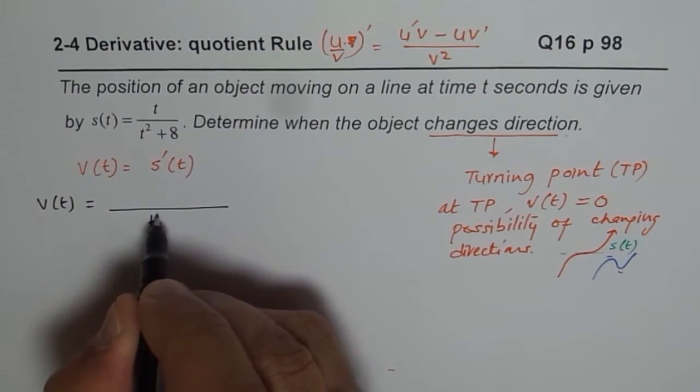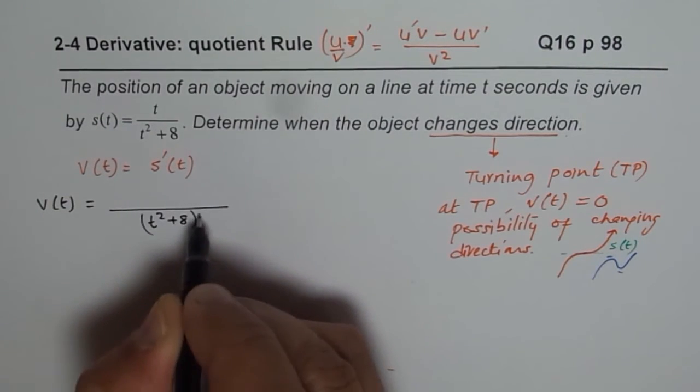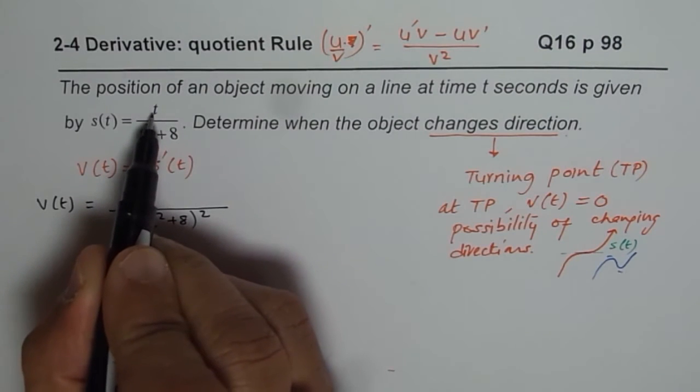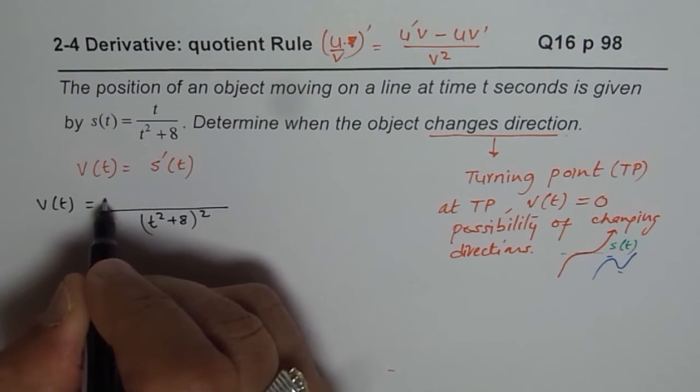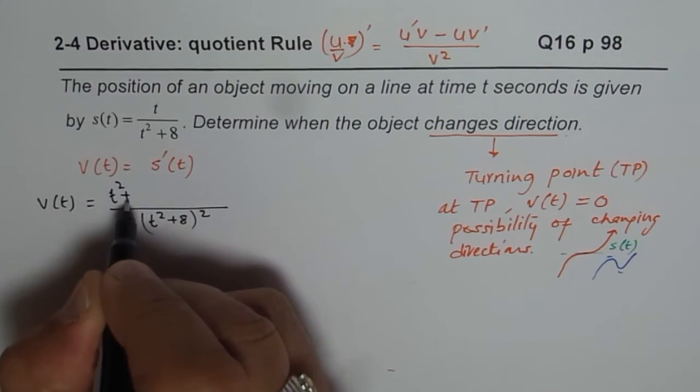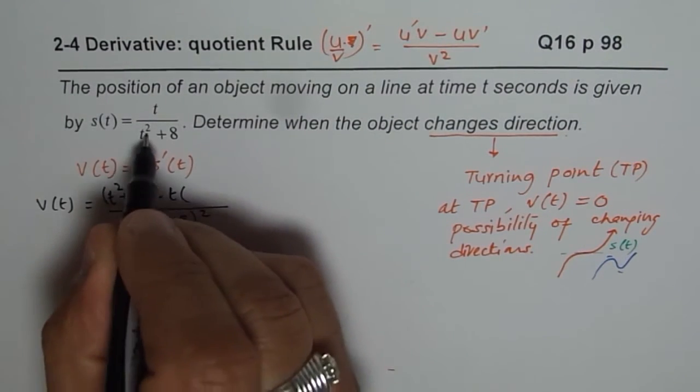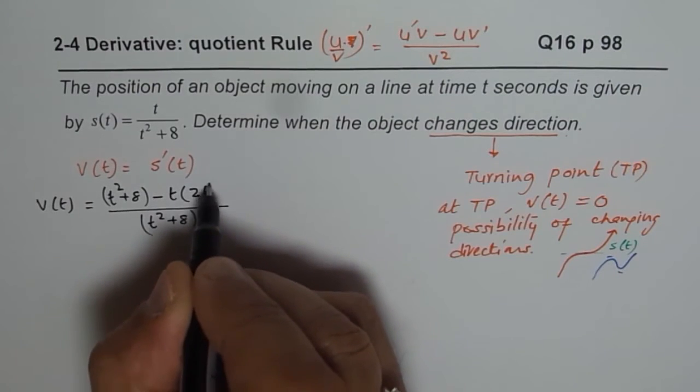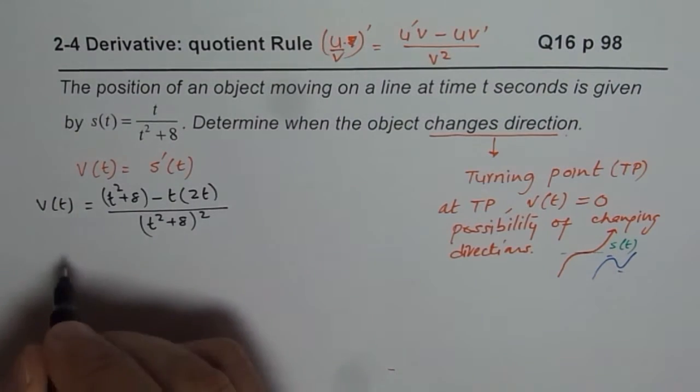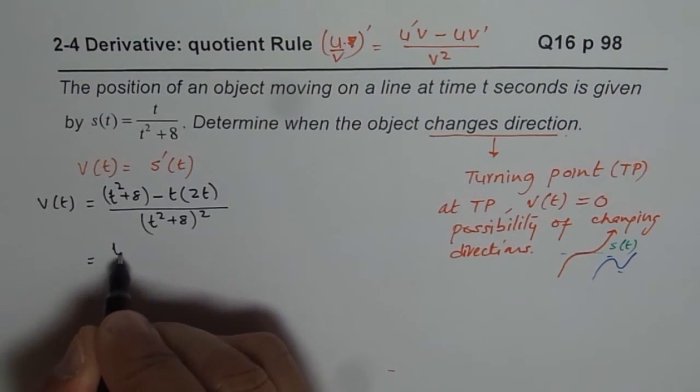So, denominator is t squared plus 8 whole square. Numerator will be, derivative of t is 1, so we get just t squared plus 8 minus, derivative t times, derivative of this will be 2t. So, that is the numerator.